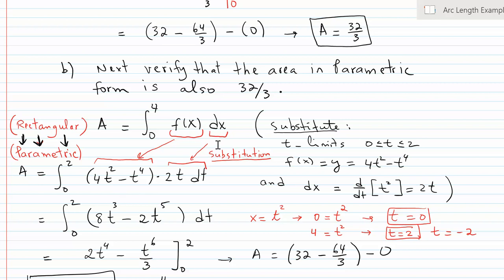What about dx? Well, dx is just the derivative of x, and since x is also given at the top to be t², I'm differentiating t² which gives me 2t dt. Those are straightforward substitutions.